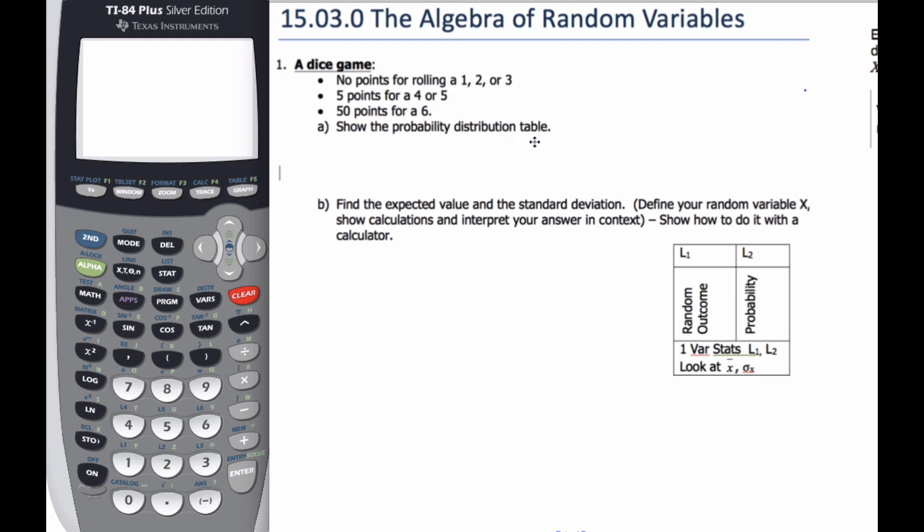So we're going to show the probability distribution table. And when I show the probability distribution table, I know that I have x, and x, my possibilities for x, I can get zero, I can get five, and I can get 50. My outcomes are not my rolls, the rolls are what, my outcomes are the points I can get.